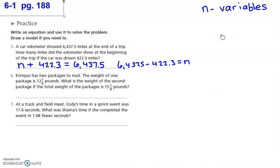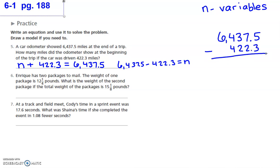The way we're actually going to solve this problem is to take the miles we ended with — 6,437.5 — and subtract how many we added, which was 422.3. I'm going to stack this problem just like you normally would, paying attention to place value. So: 5 minus 3 is 2, bring your decimal point straight down, 7 minus 2 is 5, 3 minus 2 is 1, 4 minus 4 is nothing, and 6 minus nothing is 6. So your answer would be 6,015.2 miles.